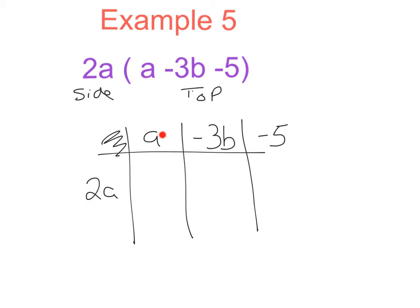2a times a - I can write 1a there if that helps - 2a times 1a gives me 2 ones are 2, and a multiplied by a gives me a squared, 2a squared. Next I'm dealing with a plus multiplied by a minus - a plus by a minus is a minus. 2 times 3 is 6, and we have an a multiplied by a b which gives me ab.